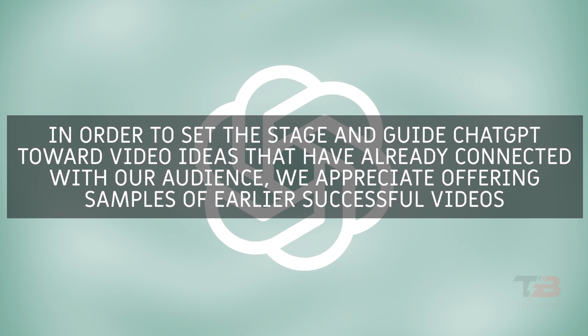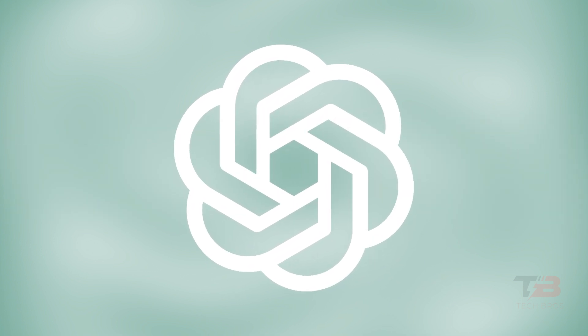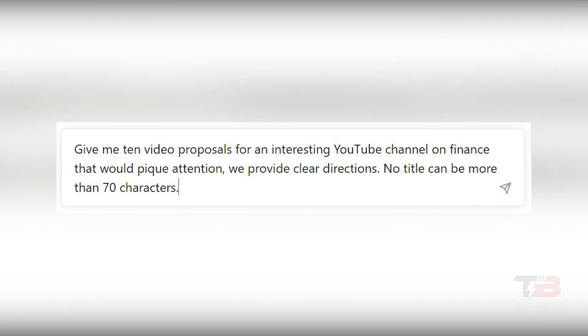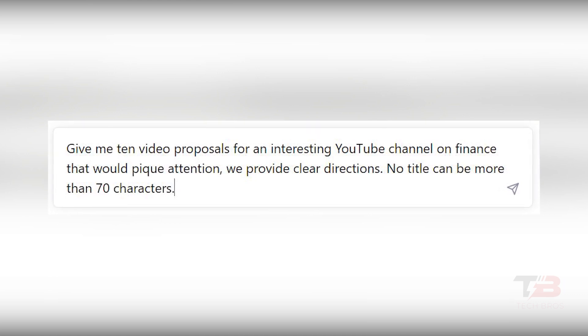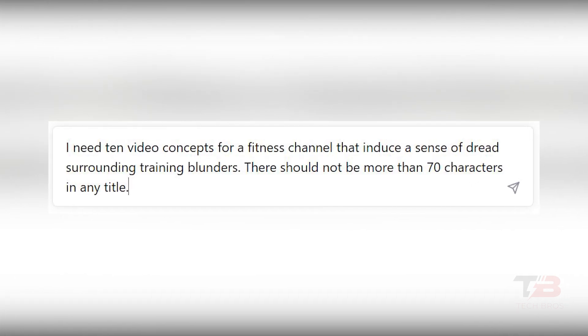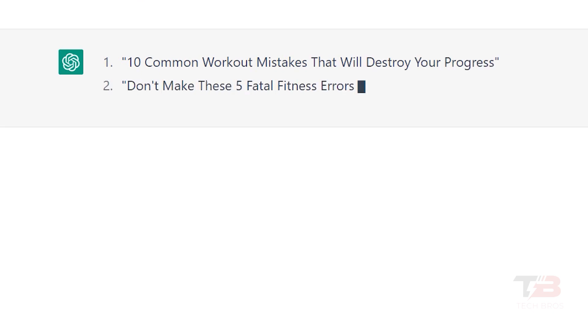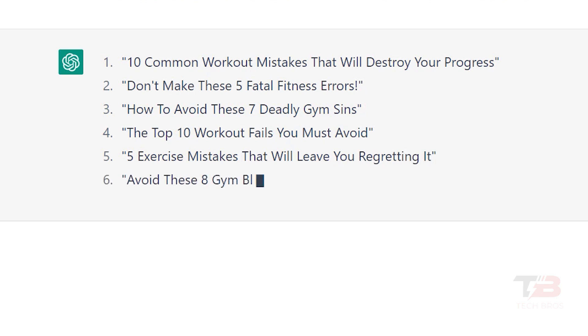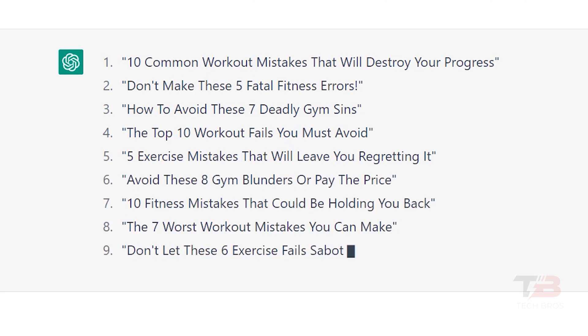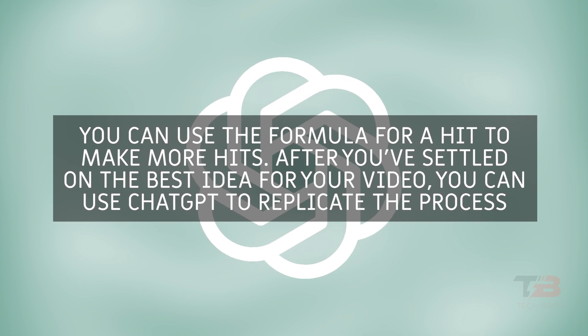Number 3: Do Freestyles. While providing samples of earlier successful videos helps guide ChatGPT, freestyling is fun on its own. You can give clear directions like: 'Give me 10 video proposals for an interesting YouTube channel on finance that would peak attention — no title can be more than 70 characters.' Or: 'I need 10 video concepts for a fitness channel that induce a sense of dread surrounding training blunders.' ChatGPT might suggest titles like 'The Dangerous Consequences of Bad Form' or 'Avoid These Common Exercise Mistakes Before It's Too Late.' You can then use that winning formula to make more hits by having ChatGPT replicate the process.